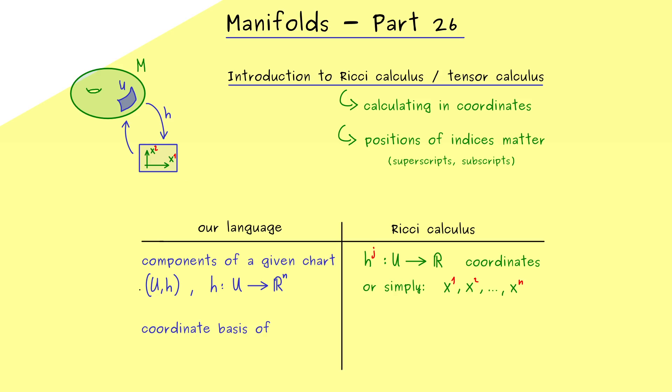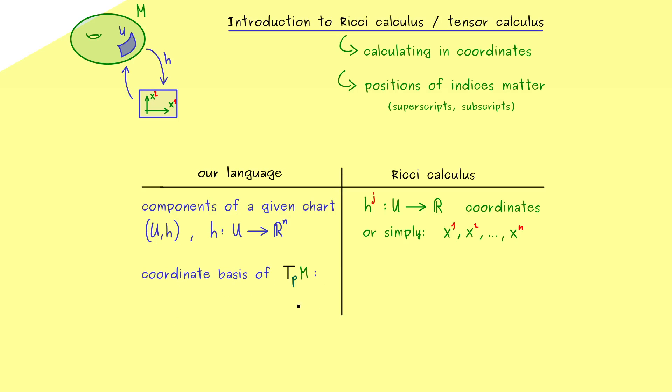However, this nicely fits when we go to the coordinate basis of the tangent space T_p M. There you know, we have already introduced a very short notation for this standard basis of the tangent space. Namely, we use the parameterization phi to push the canonical basis in R^n forwards. And please recall, for submanifolds we immediately saw the relation with the partial derivatives of phi. Therefore, in the Ricci calculus we also use this del operator, but now with respect to these coordinates. In particular, in the denominator we have superscripts again.